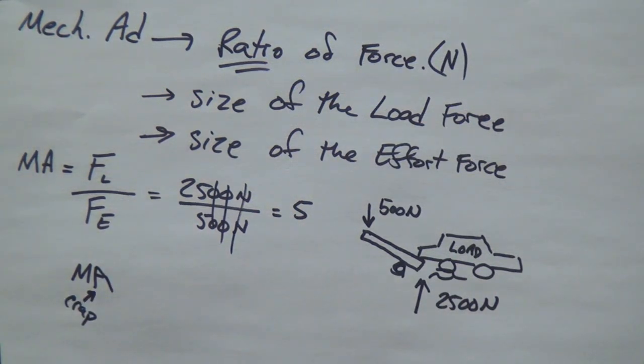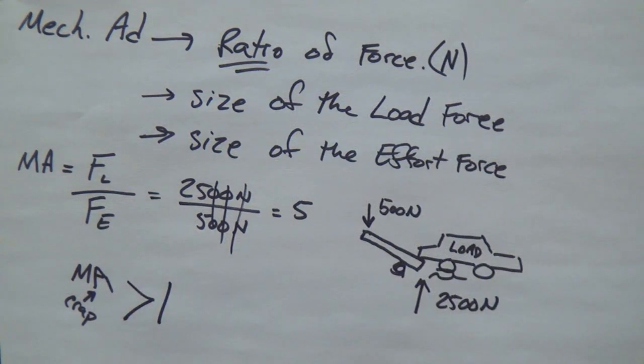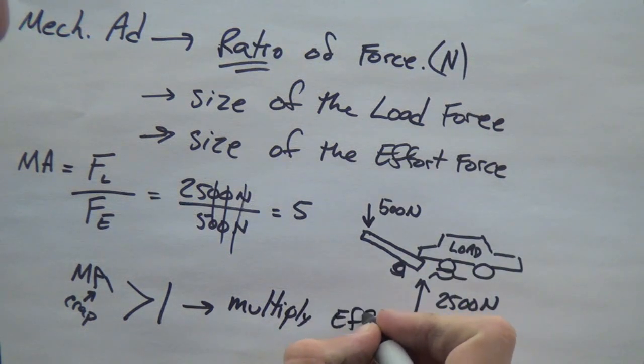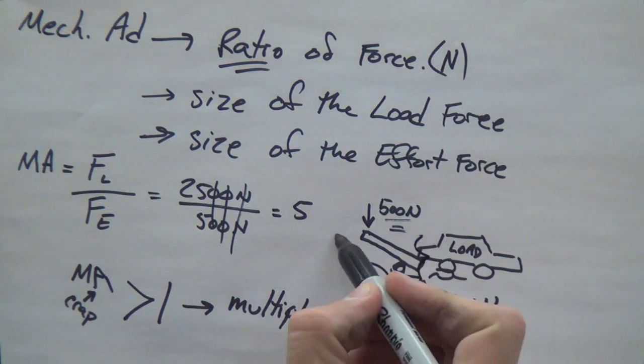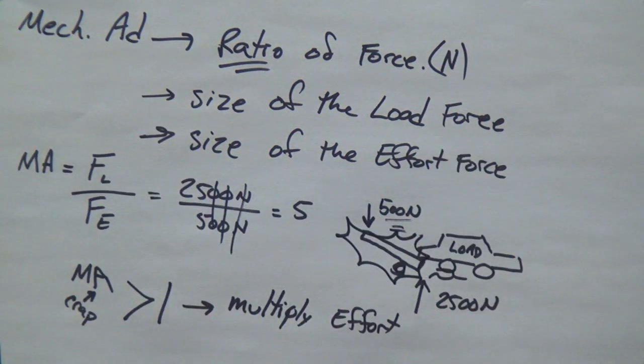The mechanical advantage, this is the important stuff. When it is greater than one, you will have a multiplication of your effort. It means that this machine will make your effort five times more awesome in order to lift up the car. You couldn't put 500 newtons with your bare hands and lift it up.